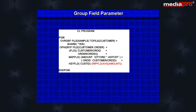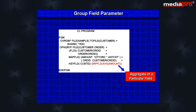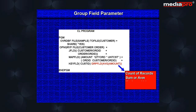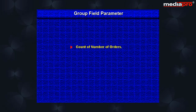Another parameter that we have is the group field parameter. It is used when we want to obtain an aggregate of a particular field. We can obtain a count of the records in a group, the sum or average of the values of a field, the maximum or minimum value of a field, etc. Let us see how this works. Say we want to have a count of the total number of orders made by each customer and also the maximum cost of a single unit of any item ordered by each customer.